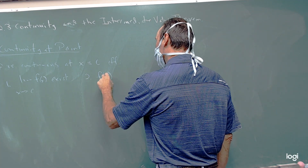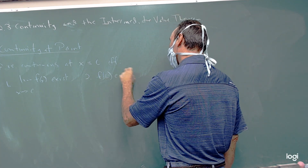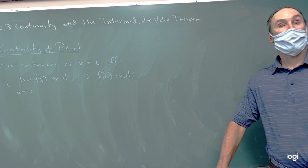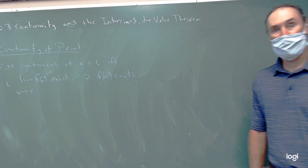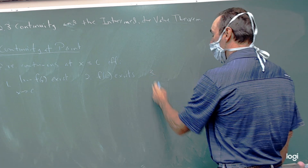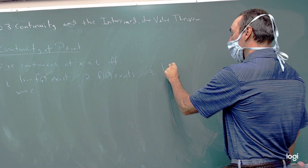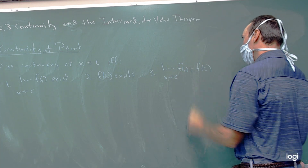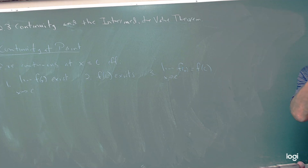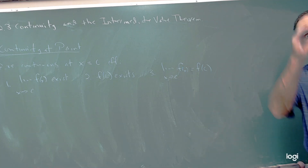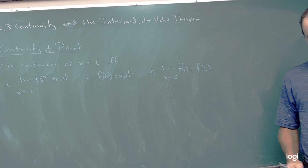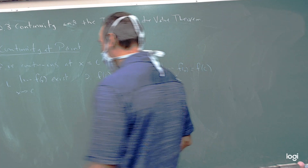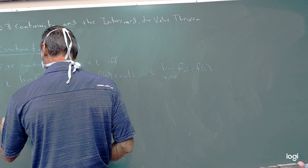Secondly, f of c must exist — the function must be defined at that point, so you can't have a hole in the graph and be continuous at that point. And the third thing is that those two have to agree: the limit as x approaches c of f of x must equal what the function is defined to be. That eliminates the case of a hole that's defined to be something else.